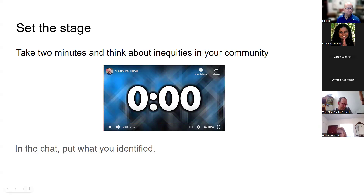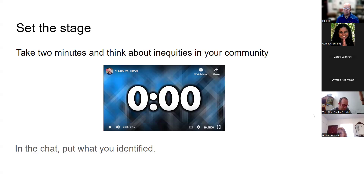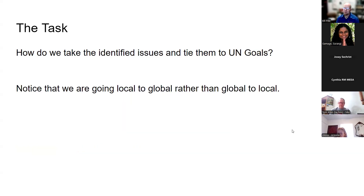Some of these we have the ability to address, some we don't. However, a lot of these we can now tie into what we're doing. The first thing I always try to do is get students to think about what's happening in their space, and then try to tie that to the UN goals. These goals are huge — you can read for multiple hours and still not finish. There are 17 of them, broken into sections, subsections, and sub-subsections.